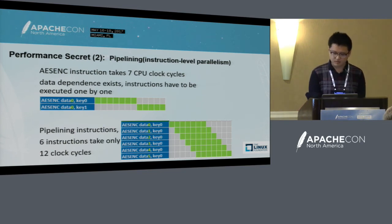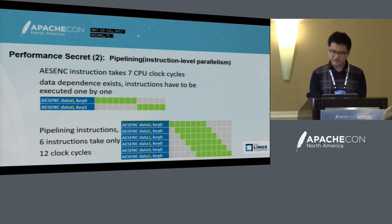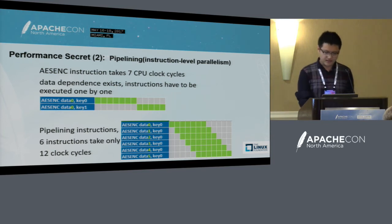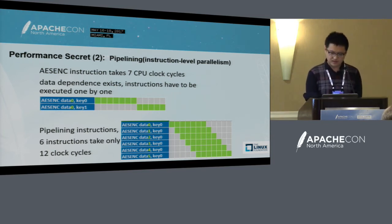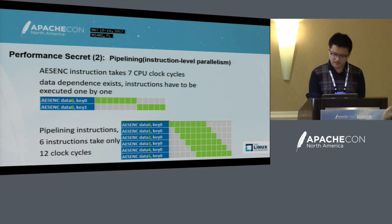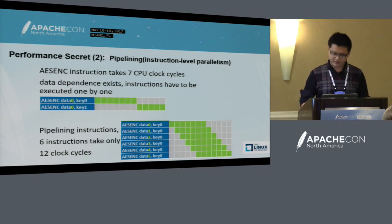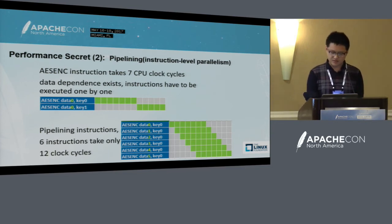Here comes secret number two: pipeline and instruction-level parallelism. One AES-NI instruction takes seven CPU clock cycles. If the destination register in two consecutive instructions is the same, a data dependency exists, and the second instruction has to wait about seven CPU clock cycles until the first finishes. But if we break the data dependency so that the destination registers are different, all the instructions can be executed in parallel.